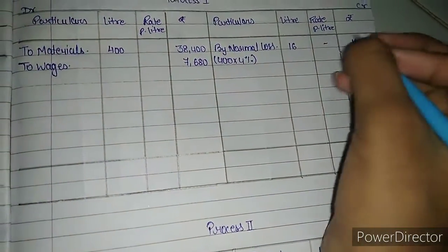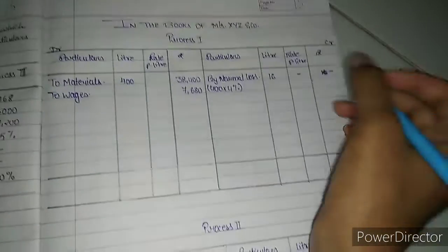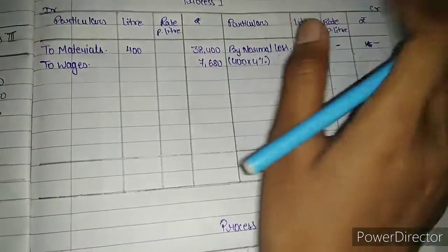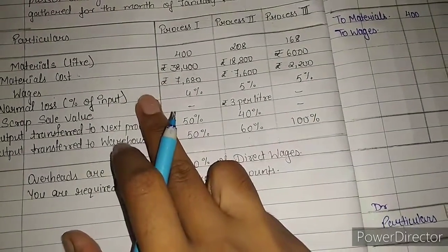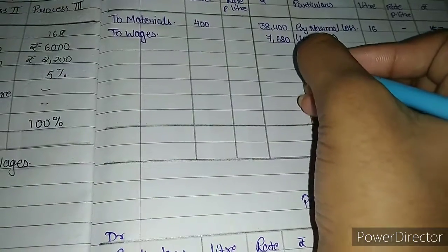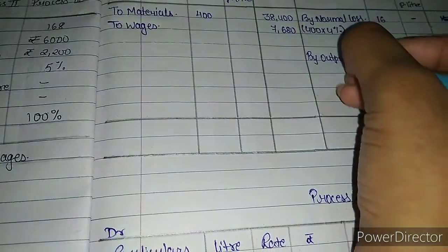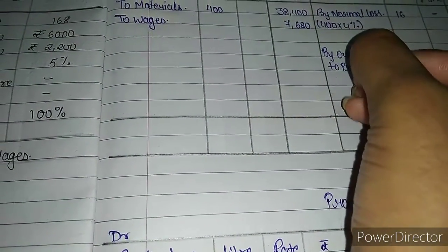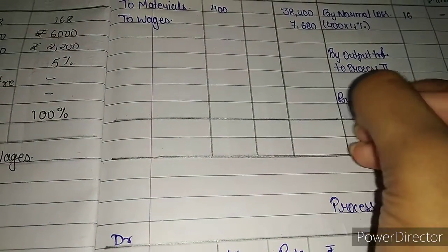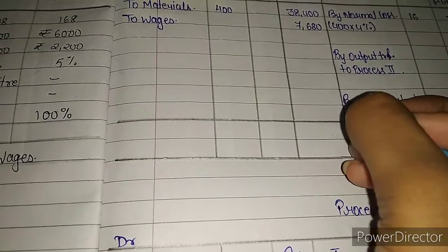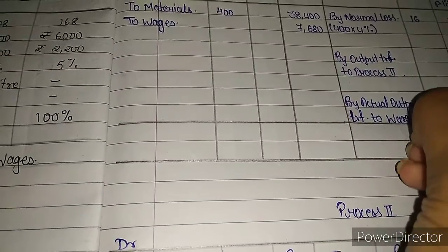If there is nothing here for scrap value, then it's zero. Zero multiplied by any number is zero. We have wages, normal loss, and output transfer which will be divided into two things: output transfer to process 2 and output transfer to warehouse.